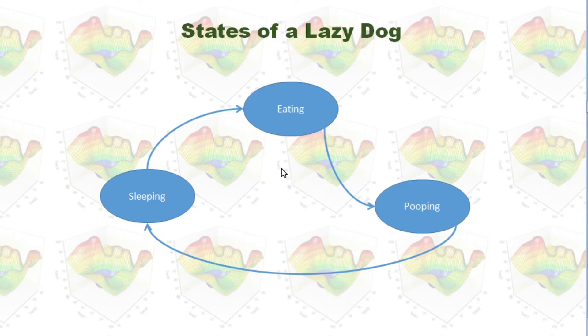This lazy dog can do those three things in this sequence, or this sequence, or the lazy dog can do the same thing over and over again. For example, he might eat something and then eat something else again.